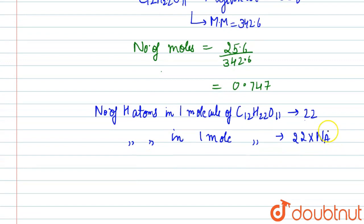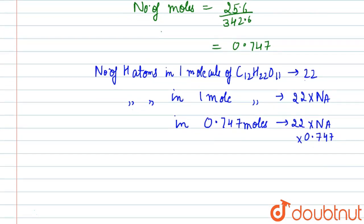According to Avogadro's law, that is 6.022 × 10^23. Now, number of hydrogen atoms in one mole of C12H22O11 will be 22 × Na. In 0.747 moles of C12H22O11, it will be 22 × Na × 0.747, which on solving will be...